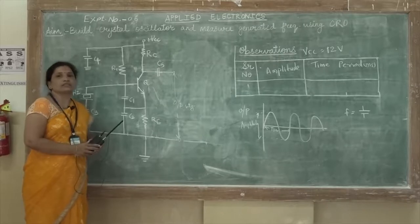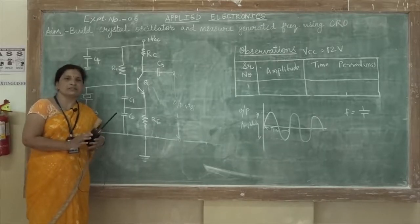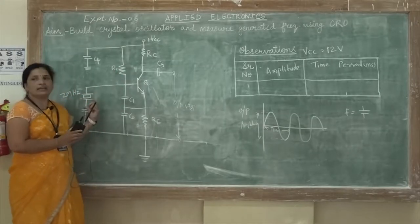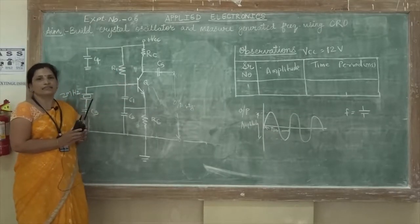First of all, we have to know what is meant by oscillator. An oscillator is nothing but a device which is going to generate oscillations, but the criteria is without giving any input it has to generate the AC output signal.